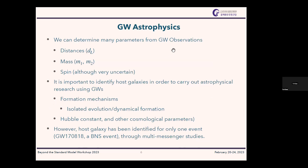From gravitational wave observations, we can determine many parameters including luminosity distance, masses of individual objects, and spin. These parameters are not very accurately determined — especially spin, whose uncertainty is very large. Most of the black holes observed are not rapidly rotating, so the spin parameters are relatively small. Also, we are observing only the last few seconds of the inspiral, during which we are not able to clearly see the effect of spin.